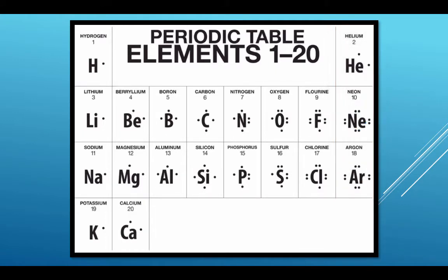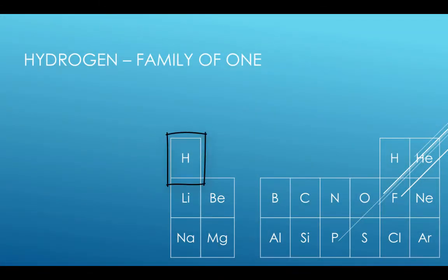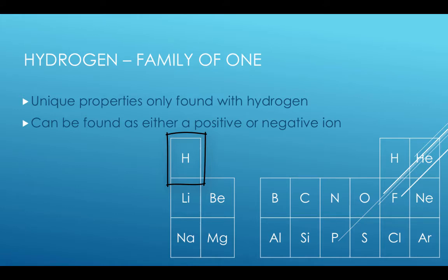Here are some of the chemical families that we will focus on in Science 10 Chemistry. Hydrogen is described as a family of one. It has unique properties only found with hydrogen. One unique property is that it can form a negative or positive ion. It can have a plus or minus charge.